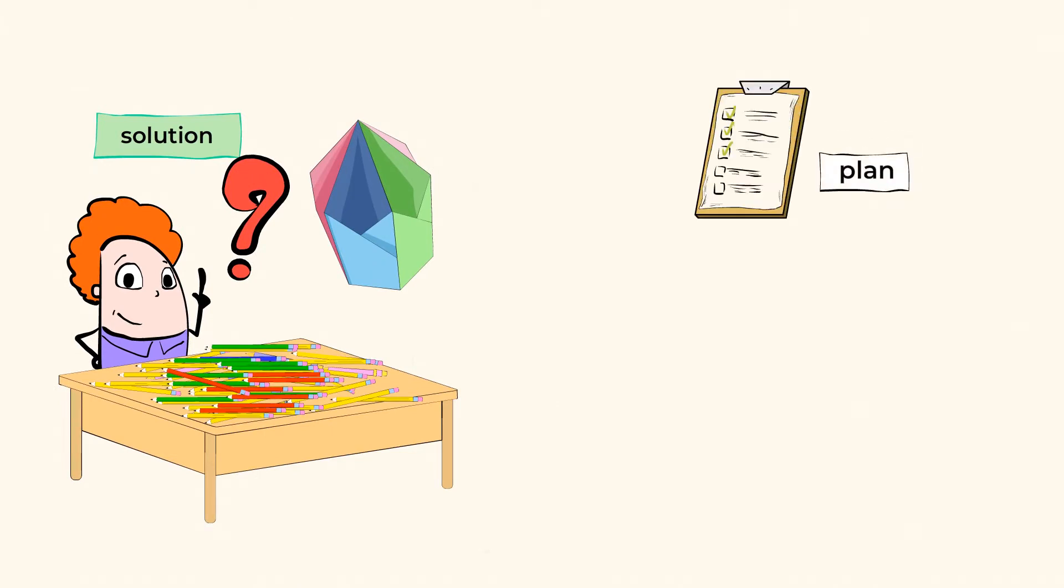First, an engineer has to make a plan. Then they sketch their idea or make a design. And this allows their imagination to transform from just a thought in their mind to a drawing of what they need to build.